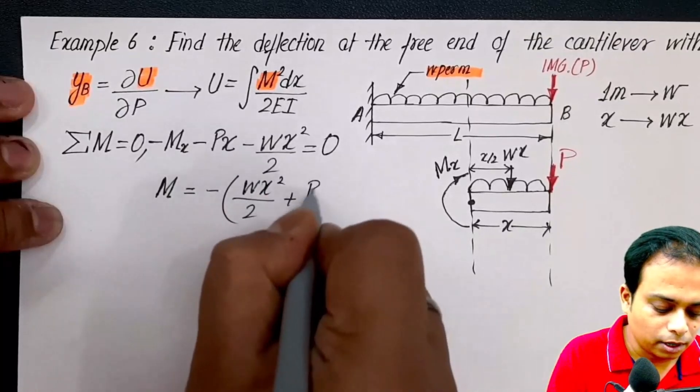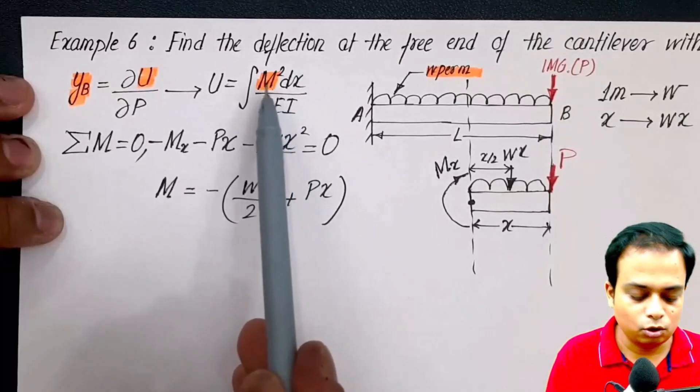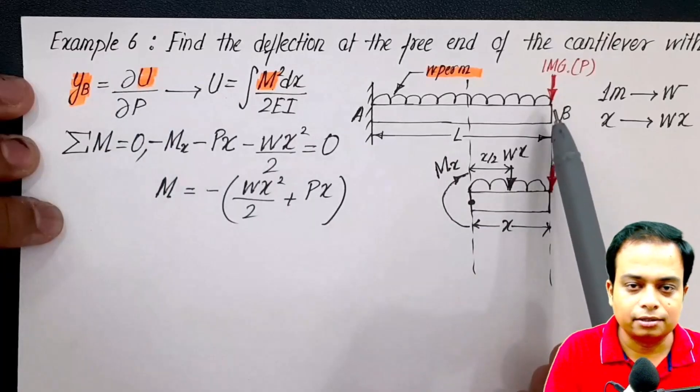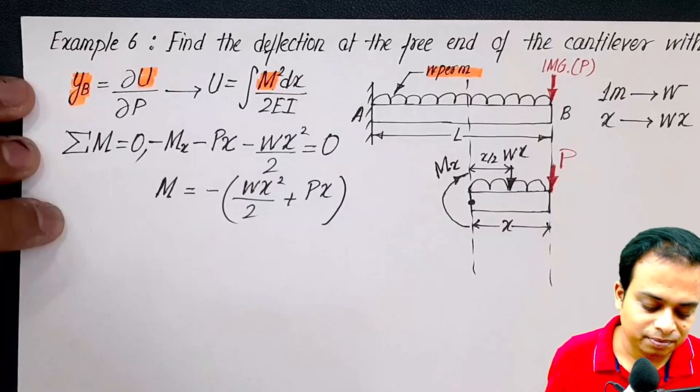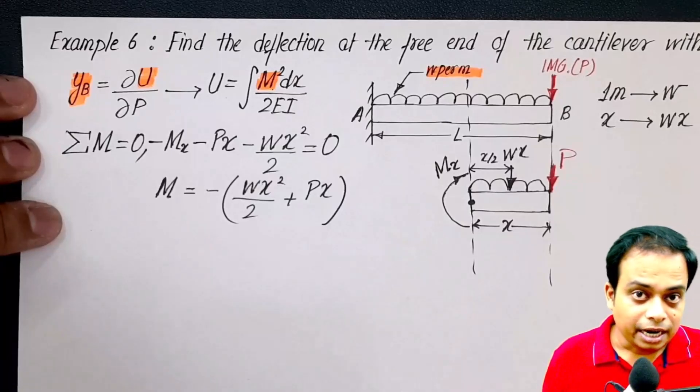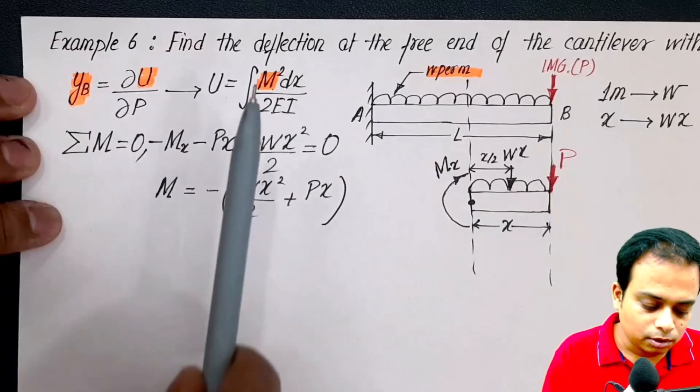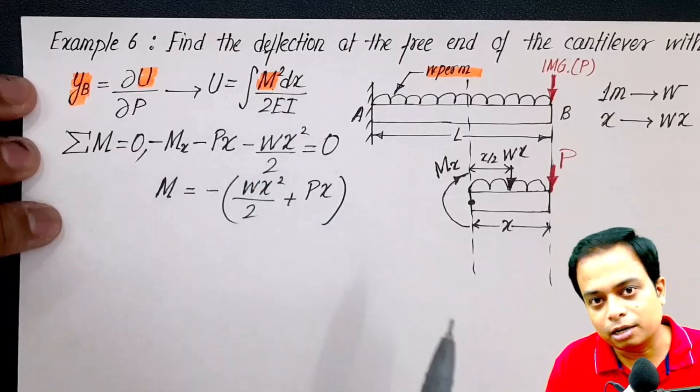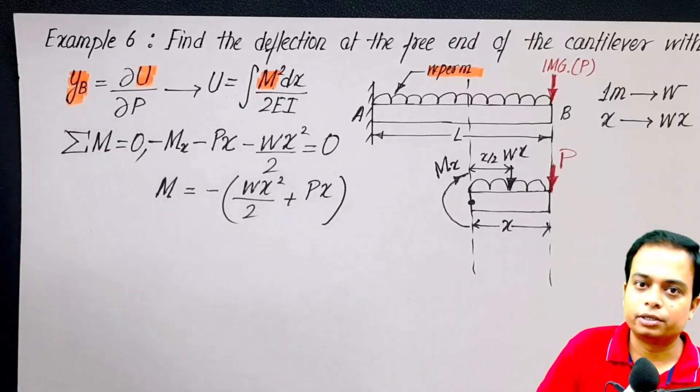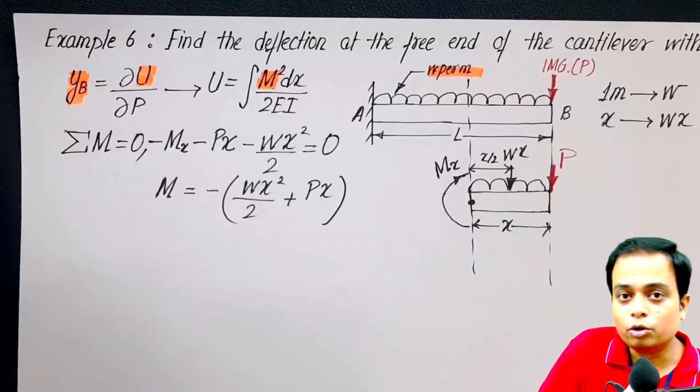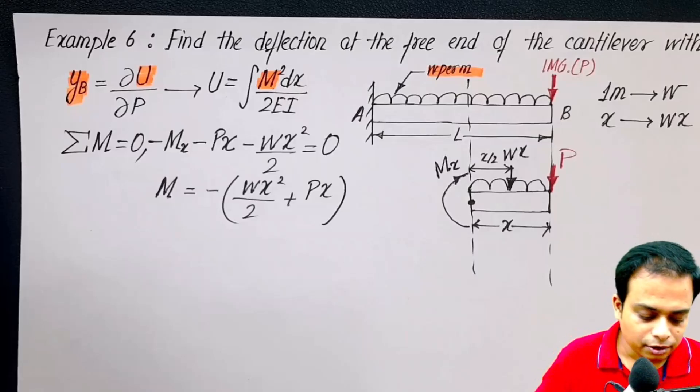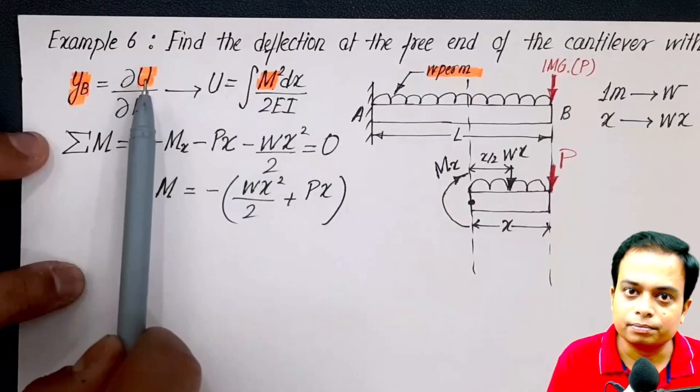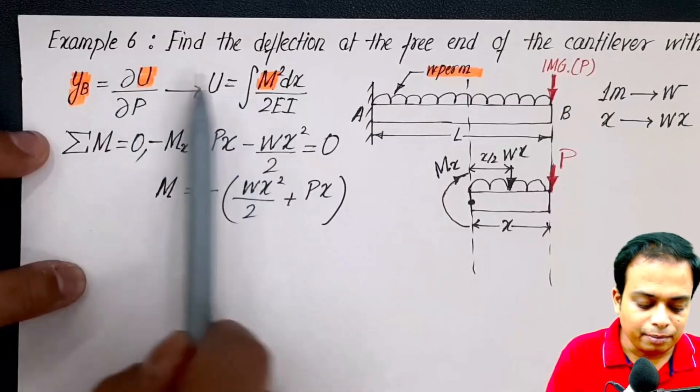Now this moment has to be plugged in to find the strain energy, and then that value of strain energy has to be plugged in to find the deflection at this free end. There is an issue that I have addressed in the previous problem also: M has to be squared and then integrated. If you try to square this and then integrate it and put the limits, that will turn into a big, long and elaborate solution. So in order to get rid of that, what we shall do is we shall put the value of U straight away and then we can make it weaker. When I say weaker, what does that mean? Just take a look.